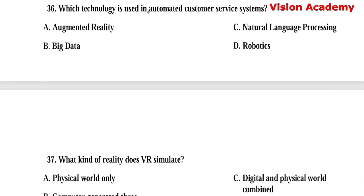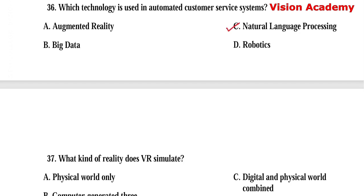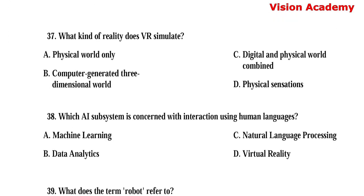Question number 36. Which technology is used in automated customer service systems? Option A: Augmented reality. Option B: Big data. Option C: Natural language processing. Option D: Robotics. Here, option C, natural language processing, is the right answer.